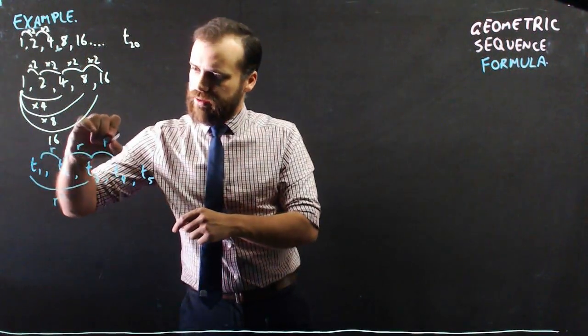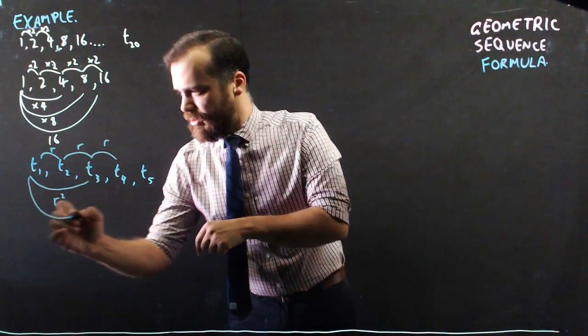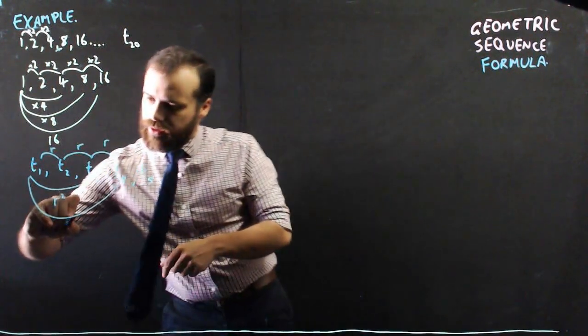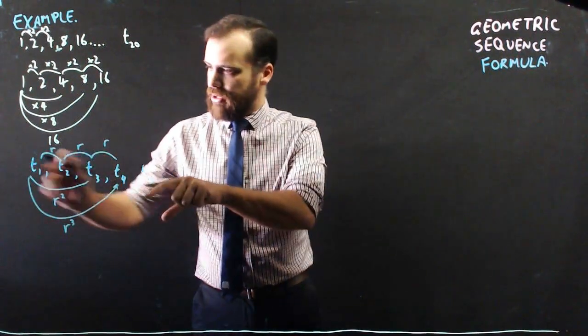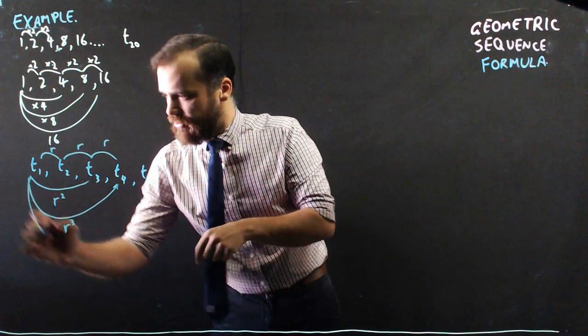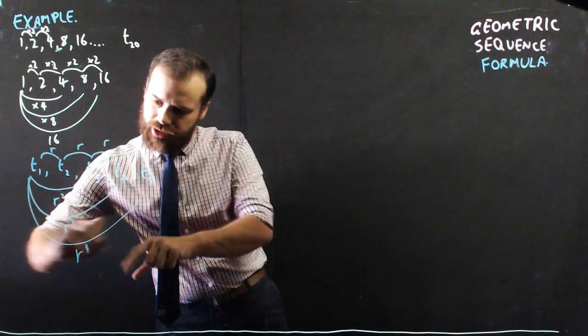If I want to get to the fourth term, I need to do R times R times R, which would be R cubed. R times R times R. And if I want to get from term 1 to term 5, that's the same as multiplying by R again, which would be multiplying by R to the 4.